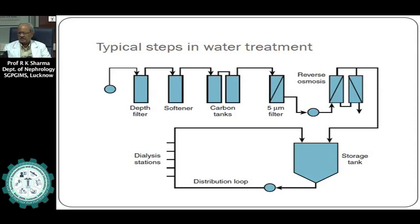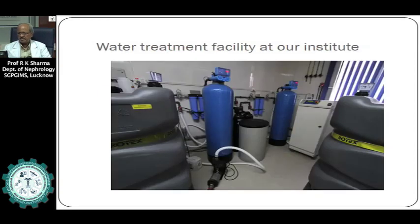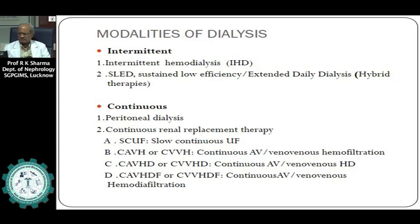The hemodialysis membrane can be of different types depending on the composition of the membrane, surface area, charge on the membrane, and pore size—all of which determine the membrane's diffusive and ultrafiltration capabilities. Membranes are made of artificial material; initially they were mainly cellulose acetate, but now we have membranes that are much more biocompatible, producing very little or no reaction when they come in contact with blood components.